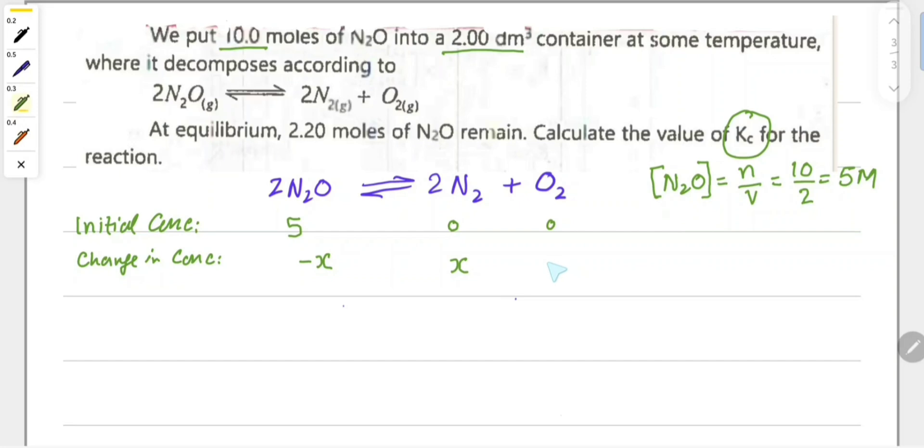Remember the stoichiometric ratio is 2:2:1. According to this ratio, products increase and reactants decrease. If N2O decreases by minus x, then plus x nitrogen forms and half x, or 0.5x, oxygen gas forms. This is the change in concentration.